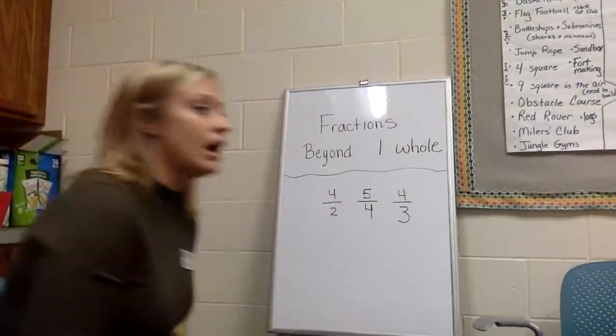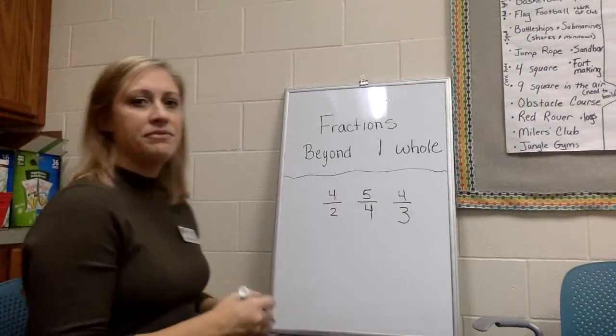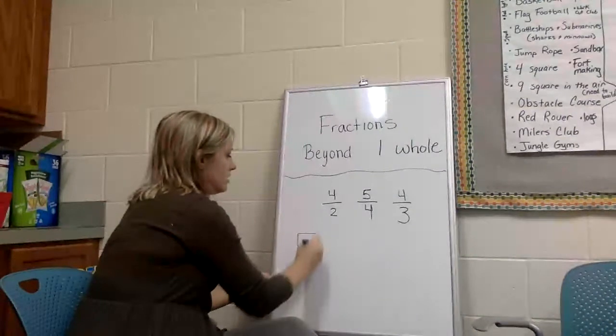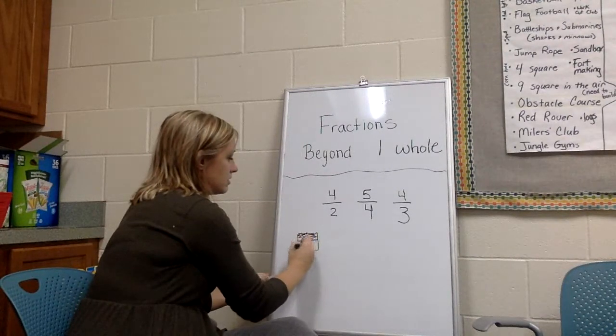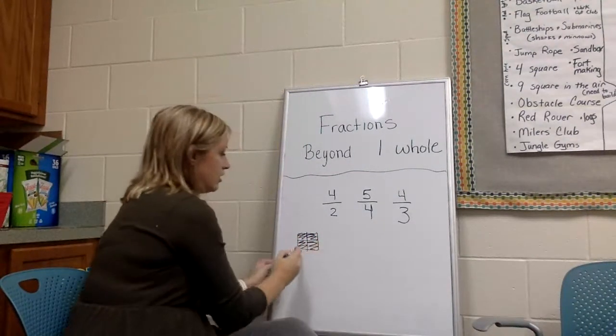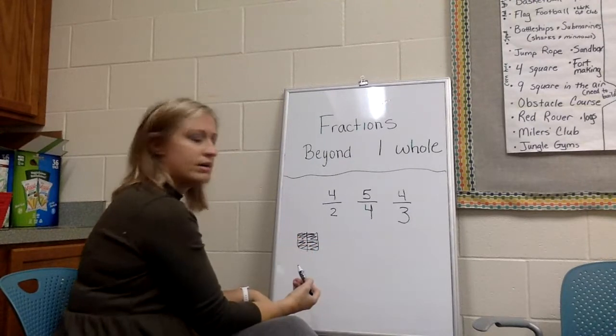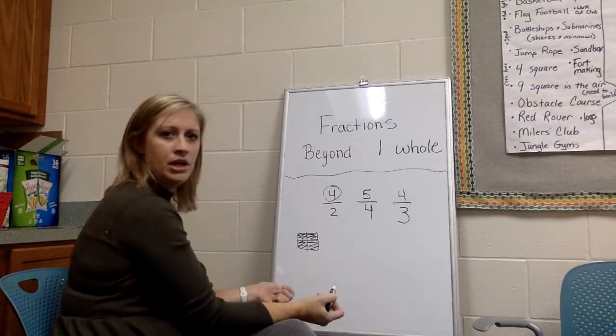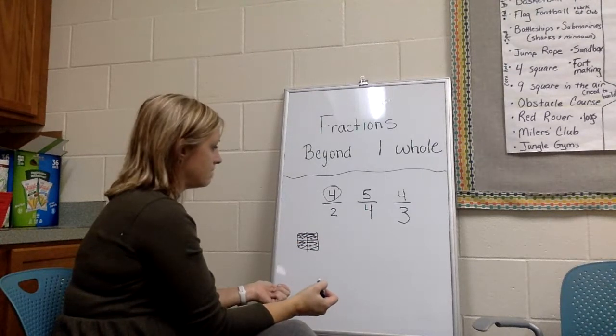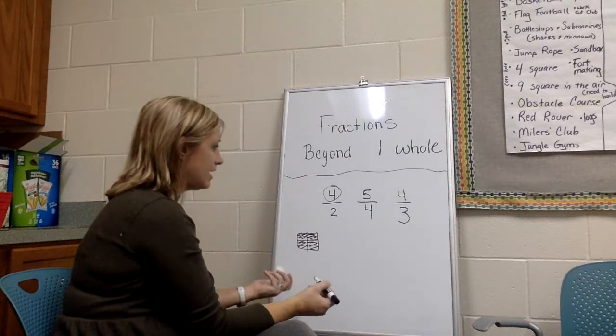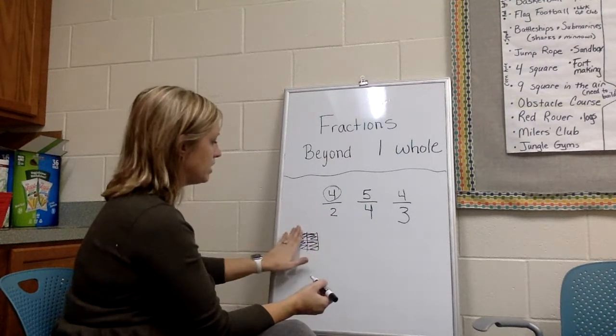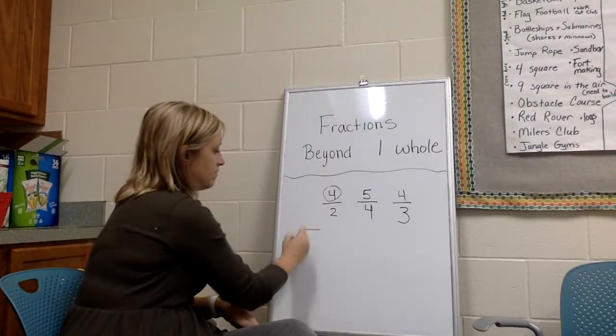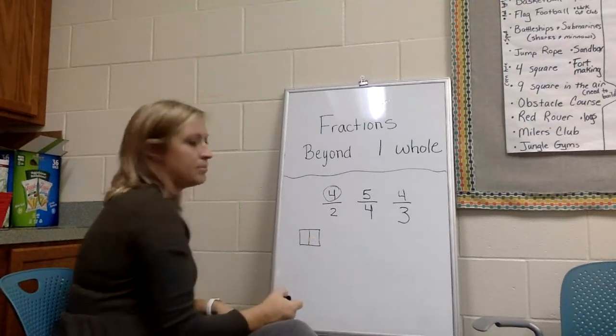So I've been looking at a lot of different pictures and some of the pictures I saw were like this. I can tell you knew that was four for the four, but I think you just weren't sure what to do about the two and so you were a little confused. When we look at the bottom number, we know that we're talking about how many pieces are in the whole.